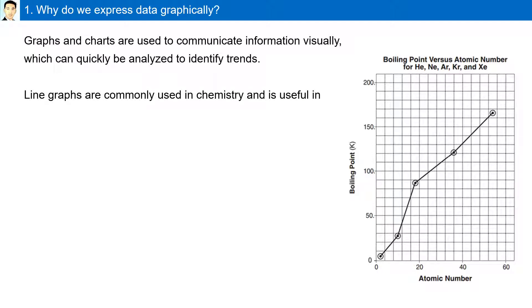Line graphs are commonly used in chemistry and are useful for showing data that changes continuously over time or temperature.